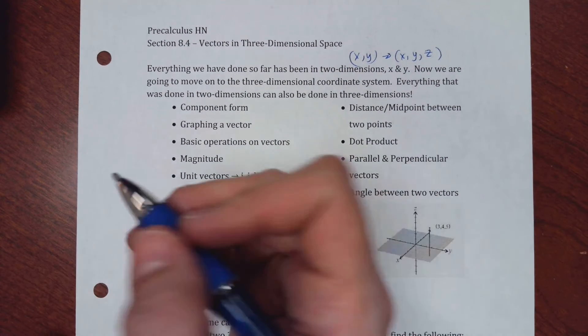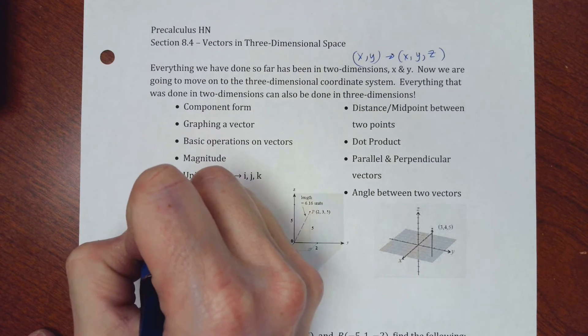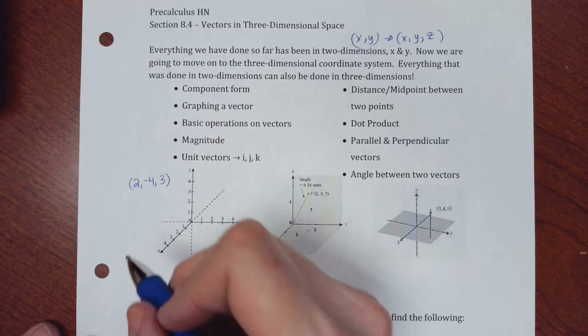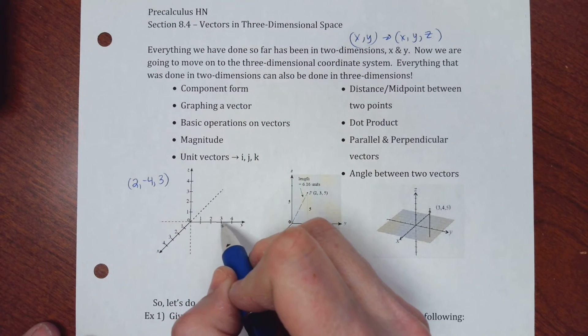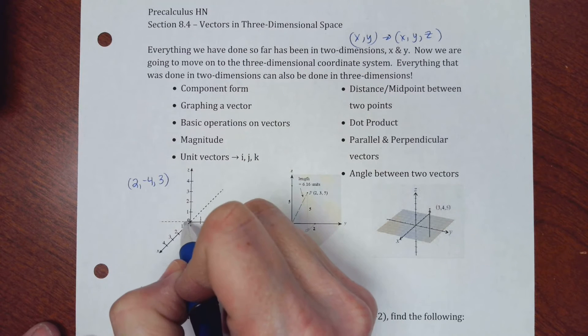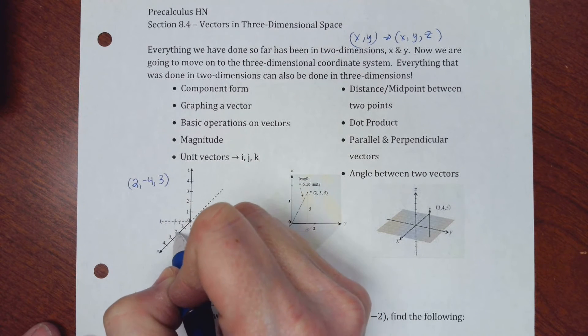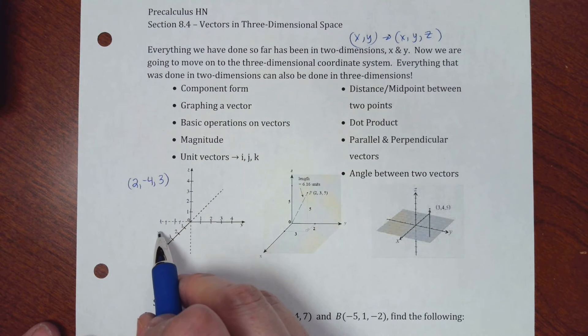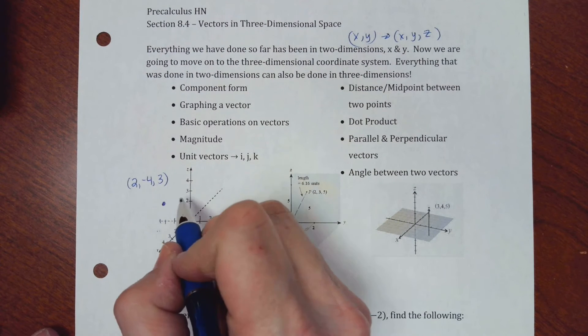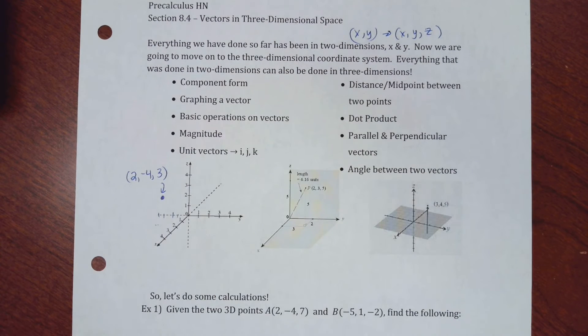If you want to graph something like the point 2, negative 4, 3, I would, my x-axis here, so I'm going to go out to 2. My y-axis positive is over this way, so I'm going to go backwards 4. So 1, 2, 3, 4. So when I graph 2, negative 4, it kind of looks like it's right there. And so then I want to go up 3. I have to go like right there because that would be like the height if you can imagine it. So you would just label it 2, negative 4, 3.